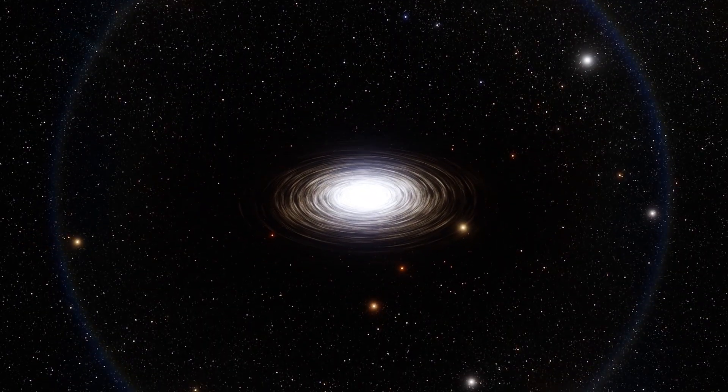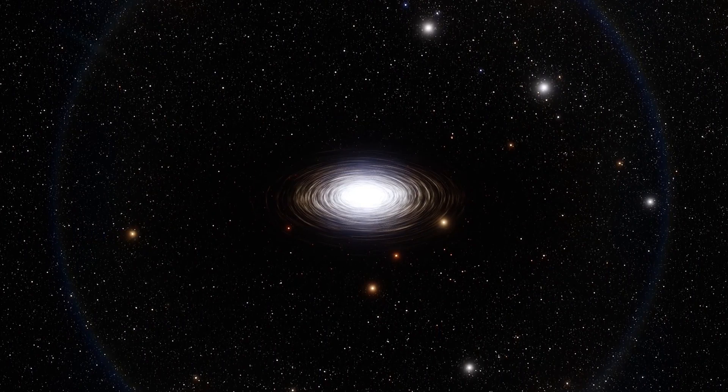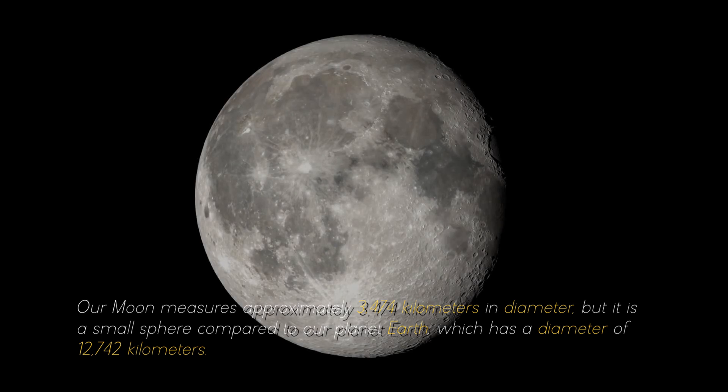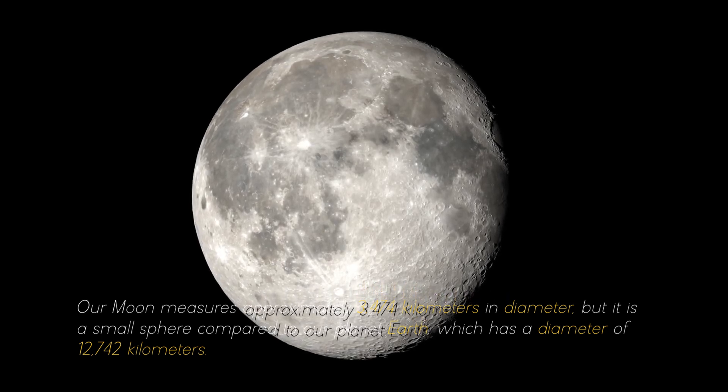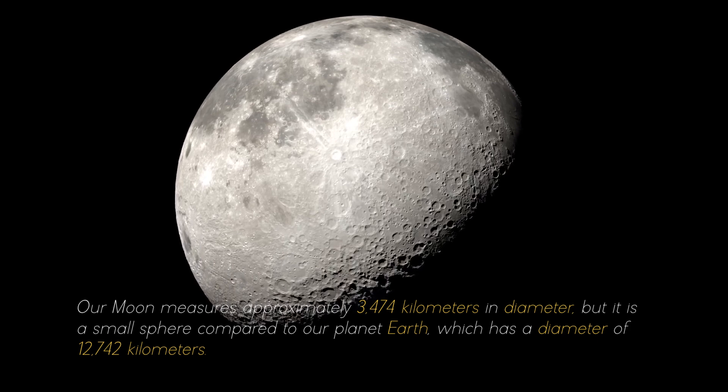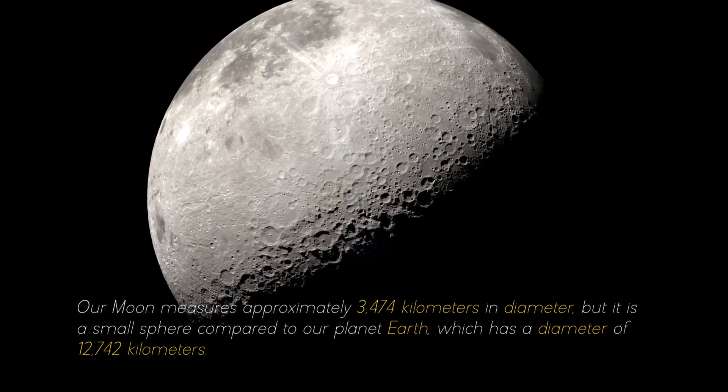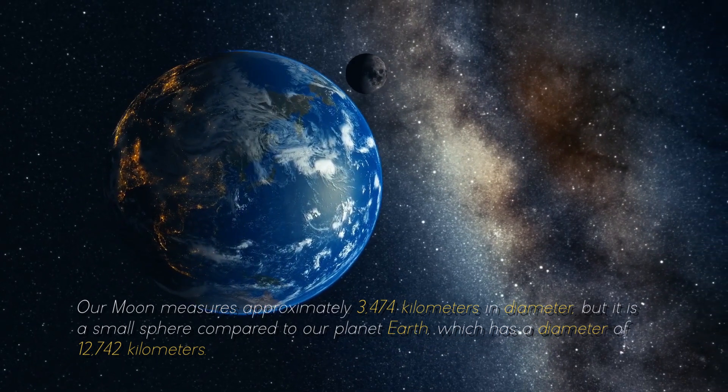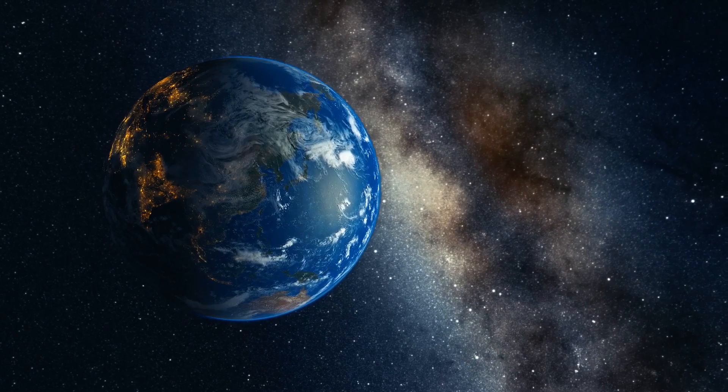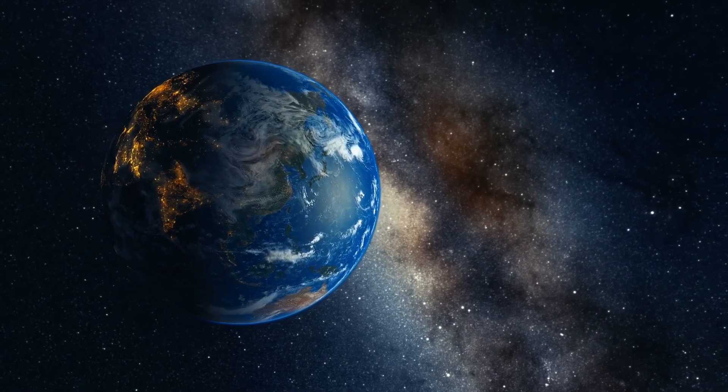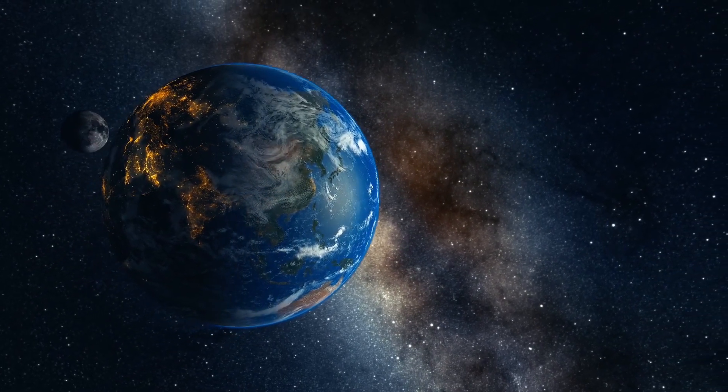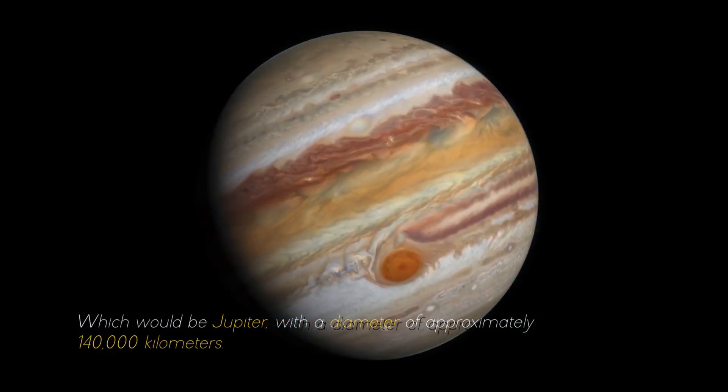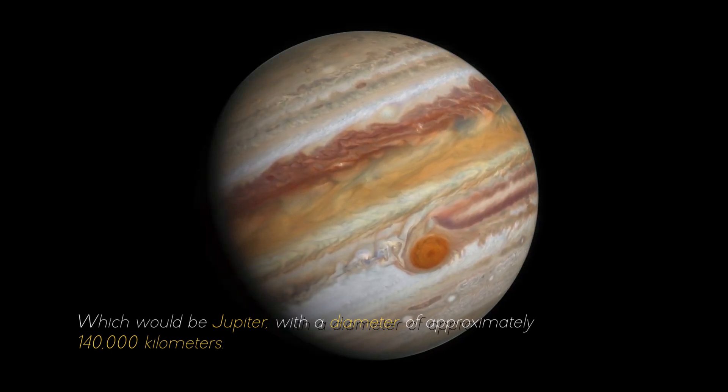To give you an idea of the colossal objects and structures that abound in the cosmos, it is necessary to start at the beginning. Our moon measures approximately 3,474 kilometers in diameter, but it is a small sphere compared to our planet Earth, which has a diameter of 12,742 kilometers. If we compare it with the largest planet in our solar system, it would look like a ping-pong ball in front of a soccer ball, which would be Jupiter, with a diameter of approximately 400,000 kilometers.